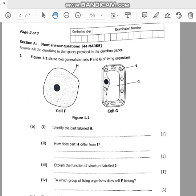The question states that Figure 1.1 shows two generalized cells F and G of living organisms. So we have cell F and cell G.